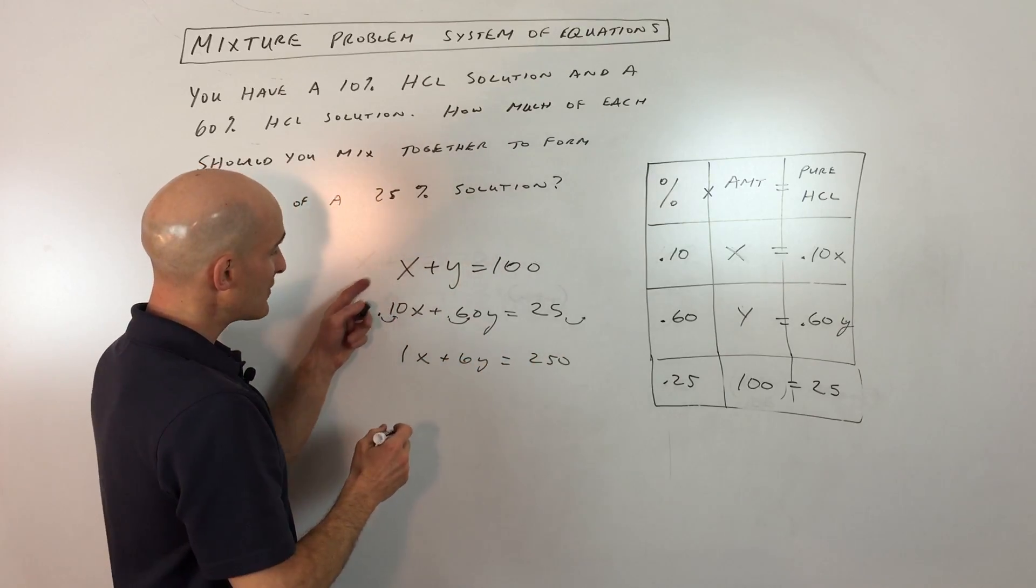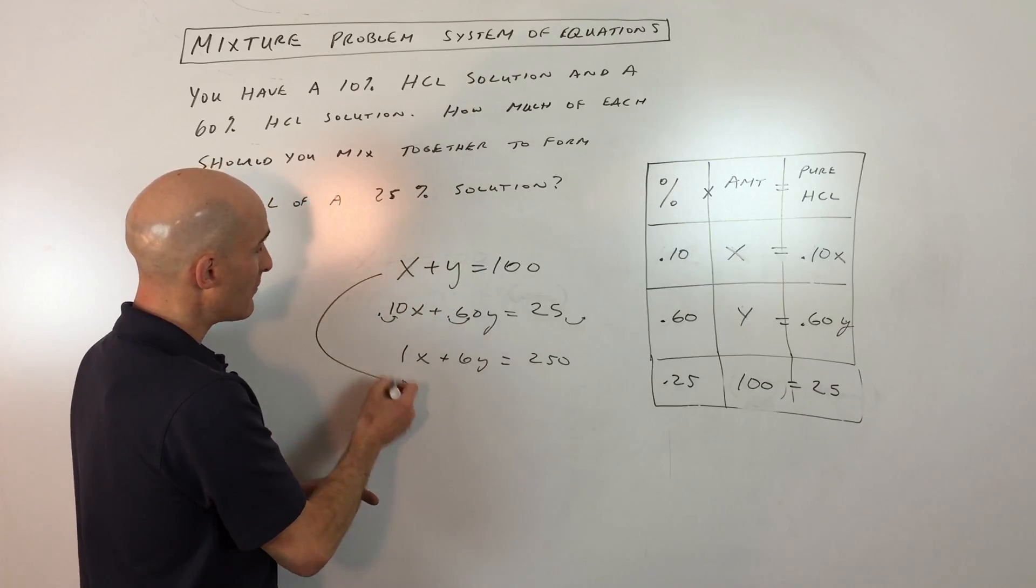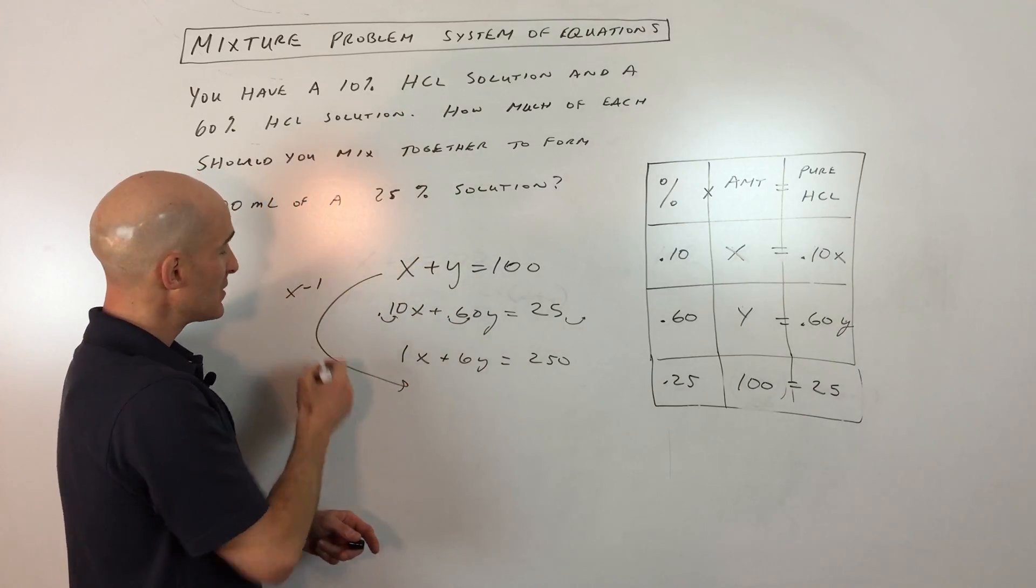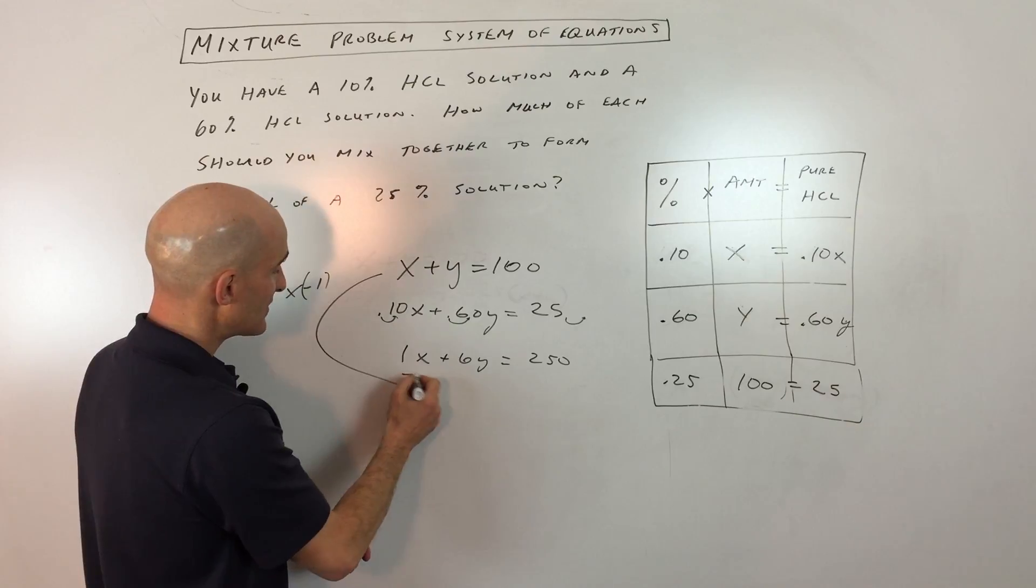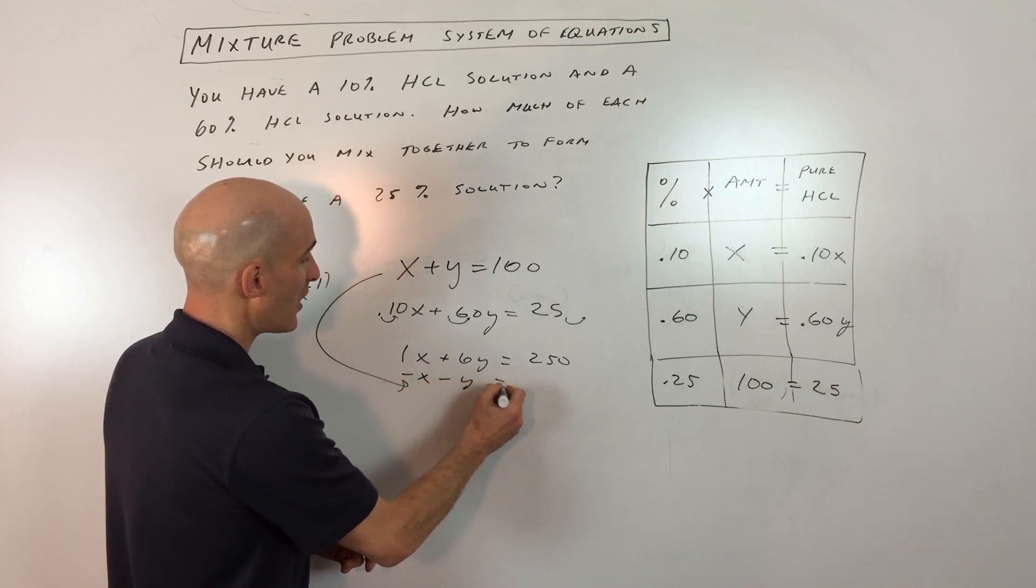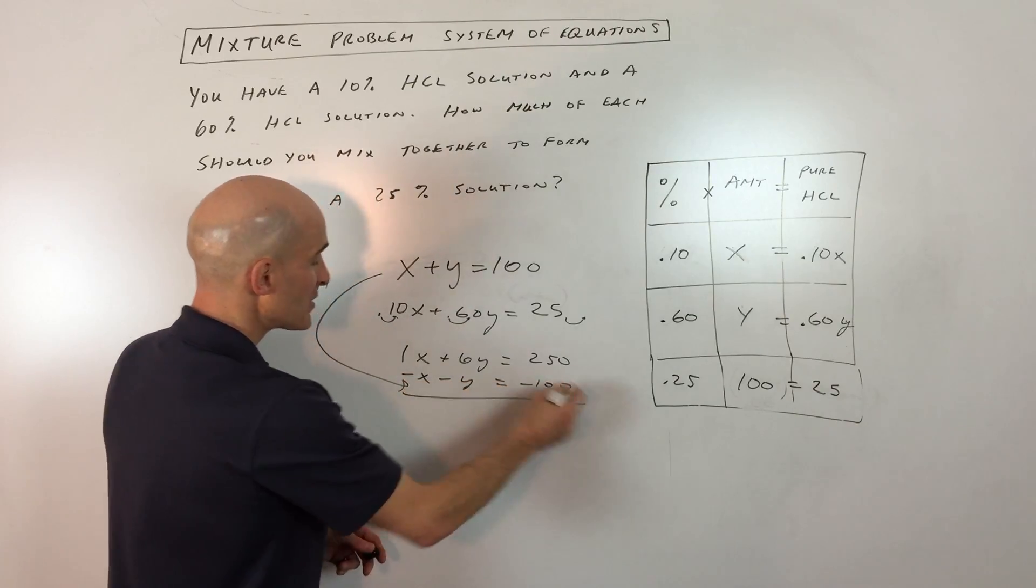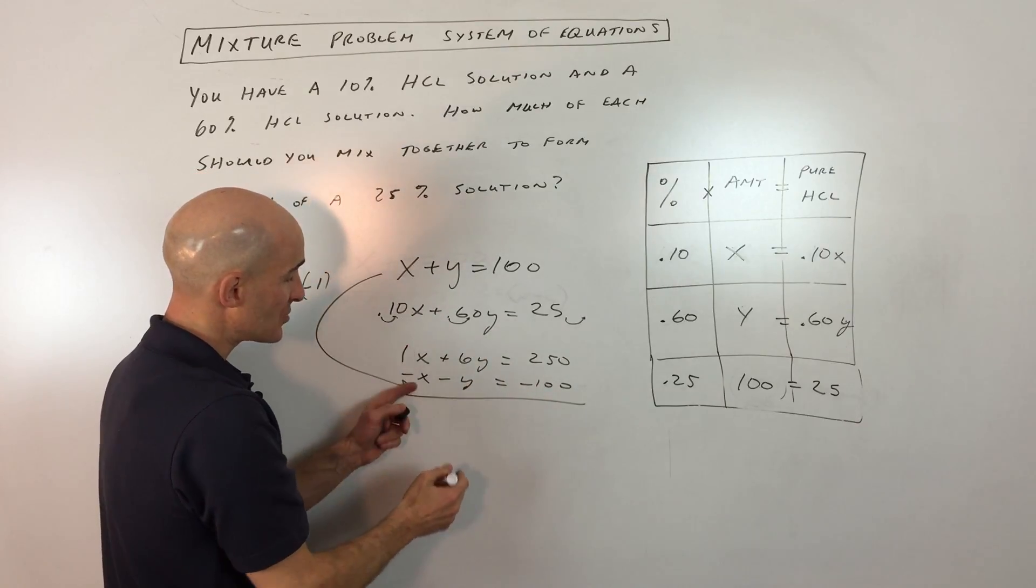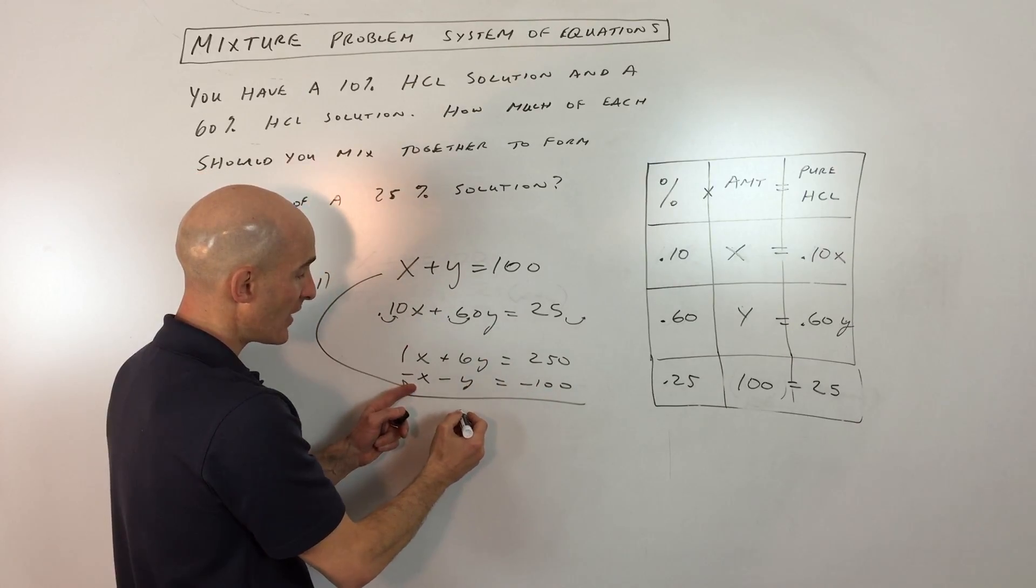So now what I'm going to do is I'm going to bring this equation down here. But what I'm going to do is I'm going to multiply it by negative 1. So if we multiply it by negative 1, this is going to make this a negative X minus Y equals negative 100. So that when we add these equations together, you can see the X's are going to cancel out because 1X and negative 1X.